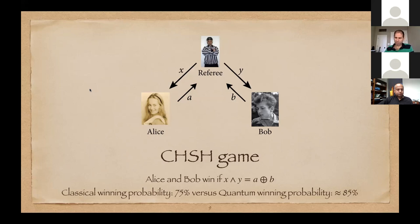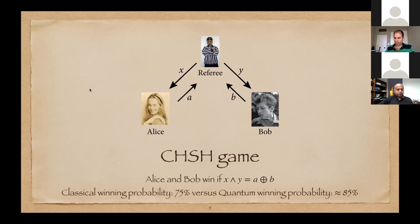That's the basis of device-independent QKD. The idea is to distribute entanglement over a quantum network connecting Alice and Bob. On some rounds, they perform tests in the form of the CHSH game — picking those rounds randomly. If they find they're winning 85% of the time, you can infer that on the other rounds they're sharing the maximally entangled state with high probability. From those non-test rounds, they can extract secret key.